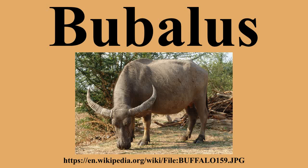Lydekker added that the line of back is nearly straight with thirteen pairs of ribs. The tail is tufted and reaching about to the hocks. The horns are more or less markedly triangular for the greater part of the length and situated low down on the skull. The muzzle is broad and the hair sparse in adults.